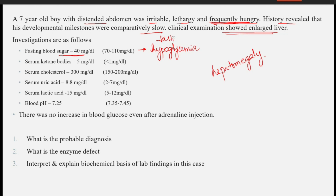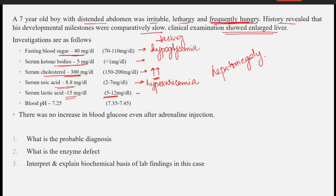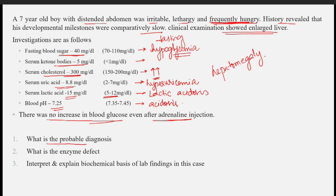Ketone bodies are 5 mg/dL, which are increased, so there is ketoacidosis. Serum cholesterol is 300 mg/dL, which is elevated — that is hypercholesterolemia. Serum uric acid is also elevated, indicating hyperuricemia. Lactic acid is 15 mg/dL, also elevated, causing lactic acidosis. pH is 7.25, signifying acidosis. There was no increase in blood glucose even after adrenaline injection, so this patient is frequently having hypoglycemic episodes.